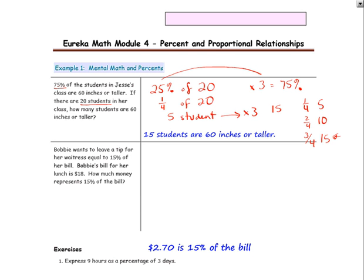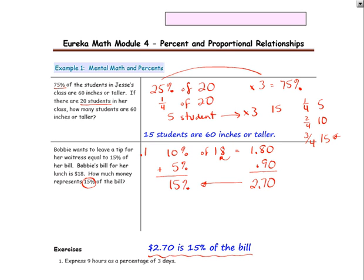Next, Bobby wants to leave a tip for her waitress equal to 15% of her bill. Bobby's bill for her lunch is $18. How much money represents 15% of the bill? For 15% a good way to do that problem mentally is to find 10% first then take half of that which would be 5% add it together and you would get 15%. So the first step of taking 10% of 18 is $1.80 and I know that because 10% represents .10 and 1 tenth times 18 all you have to do is move the decimal one place to find 10%. 5% would be half of that amount. Half of $1.80 is $0.90. Then I add those amounts together and that gives me $2.70. So that represents 15% of the bill. $2.70 represents 15% of the bill.